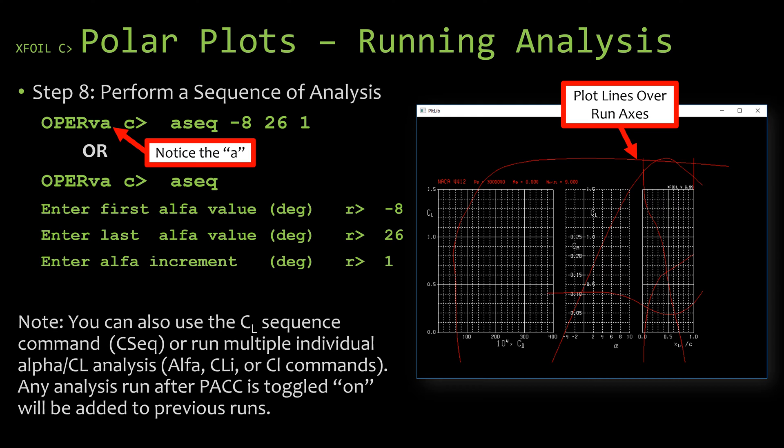For this analysis I'm wanting to do a range of angle of attack from -8 to 26, and I'm wanting to do it at every one degree point. So at -8 and -7, -6, -5, all the way up, you know, 24, 25, 26. So to do that I'm going to enter -8 for the first alpha value, 26 for the last alpha value, and 1 for the increment between runs and hit enter.